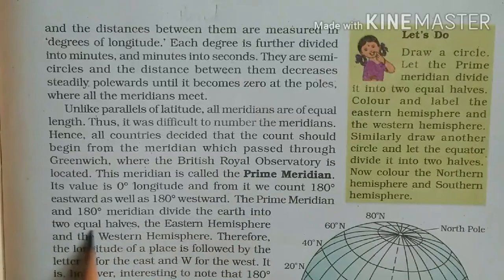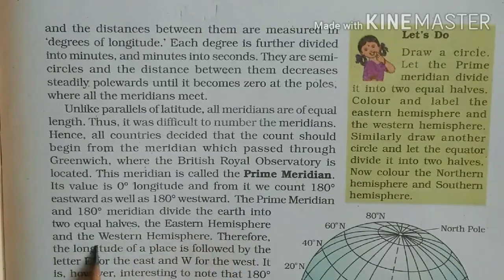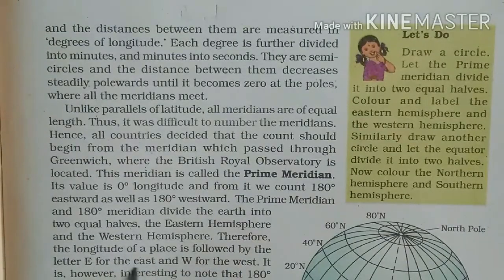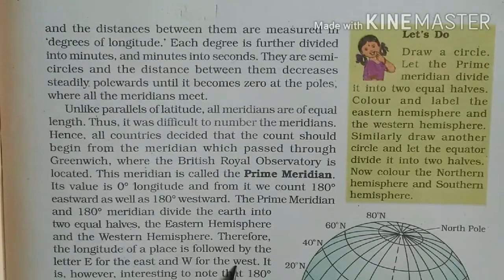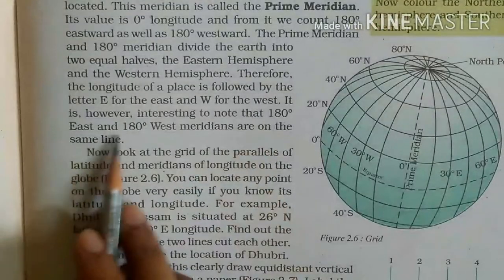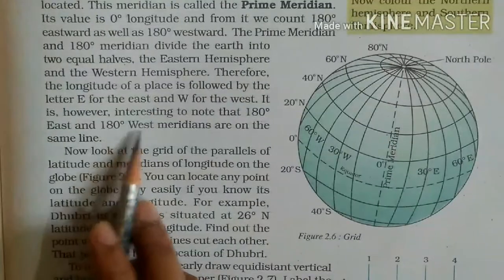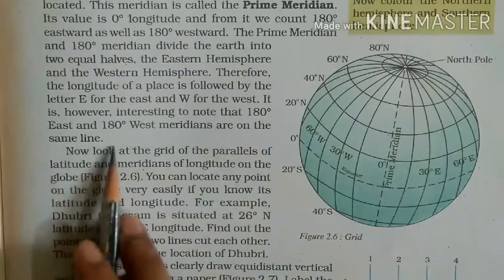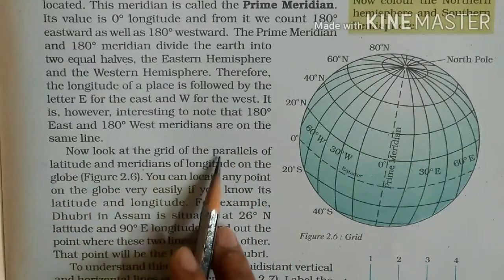From the prime meridian we count 180 degrees eastward as well as 180 degrees westward. The prime meridian and 180 degree meridian divide the earth into two equal halves — the Eastern Hemisphere and the Western Hemisphere. The longitude of a place is followed by the letter E for East and W for West. Notably, 180 East and 180 West meridians are on the same line.